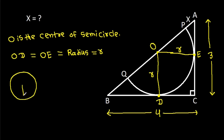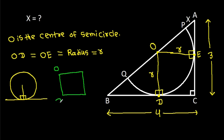In any circle, the radius and tangent are perpendicular to each other. So this angle will be 90 degrees and this angle will also be 90 degrees. Now in quadrilateral ODCE, three angles are 90 degrees, so this angle will also be 90 degrees.